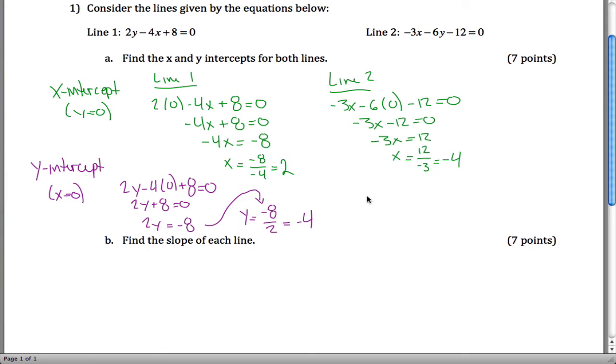And then finally for Line 2, if x equals 0, negative 3 times 0 minus 6y minus 12 equals 0, which is negative 6y minus 12 equals 0. So if you add 12 to both sides, you get negative 6y equals 12. Divide both sides by negative 6. 12 divided by negative 6 is negative 2.